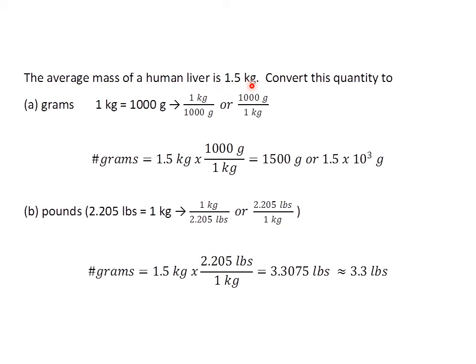Let's look at another problem. The average mass of a human liver is 1.5 kilograms. Convert this quantity to grams. We need to know how many grams are in a kilogram. Kilo meaning thousands, so for one kilogram I have a thousand grams. From this equality, I could set up a conversion factor: one kilogram divided by a thousand grams, or a thousand grams divided by one kilogram. I'm looking for grams, so I'll use the second one. So 1.5 kilograms times 1,000 grams divided by one kilogram — kilograms cancel. So 1.5 times 1,000 gives me 1,500 grams.